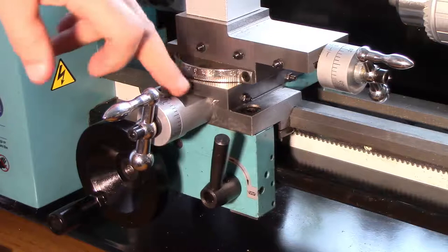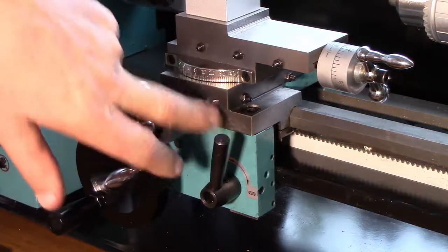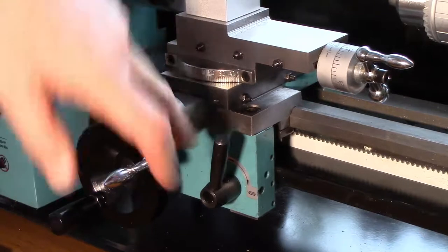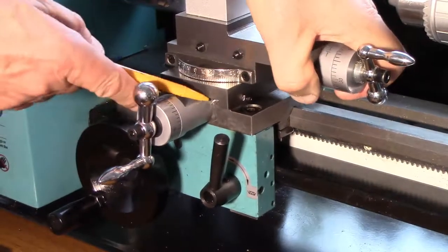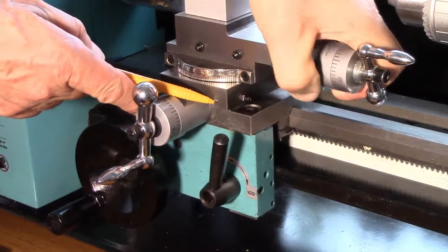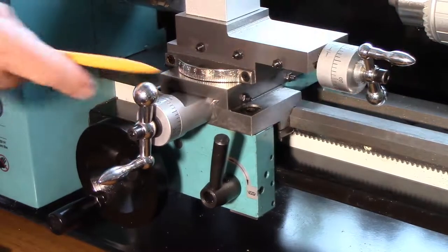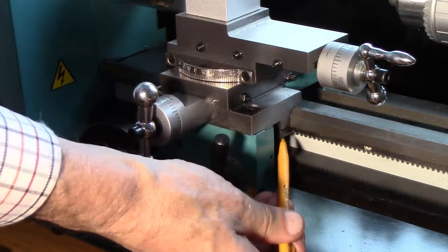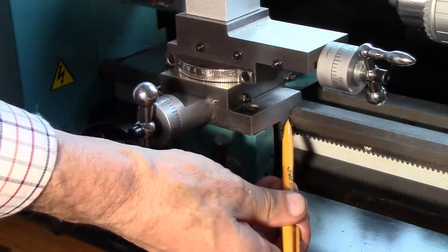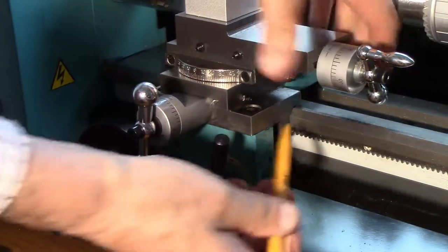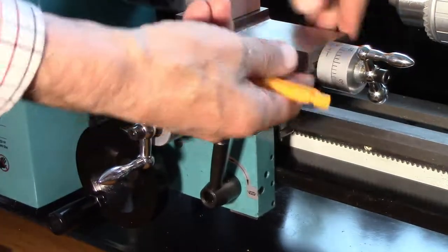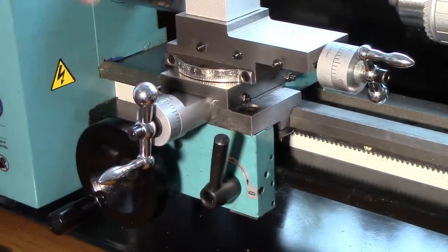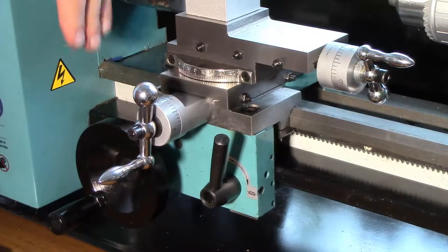The cross slide here is held in place with this dovetail and so there's a possibility of the whole saddle moving here if this strip is not sufficiently tight. So those are the two places which could cause an upward movement on this side stimulated by a downward movement, a downward force on the tool.